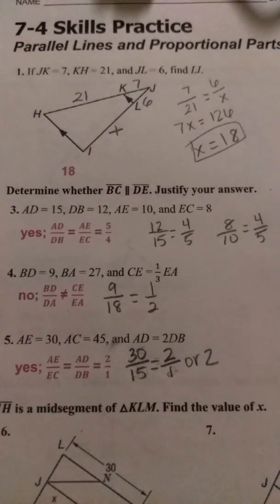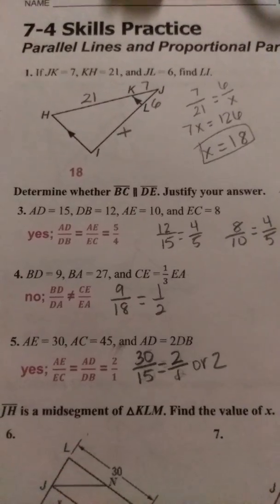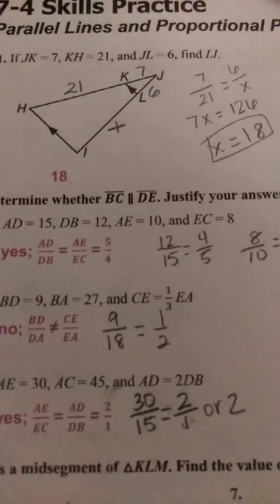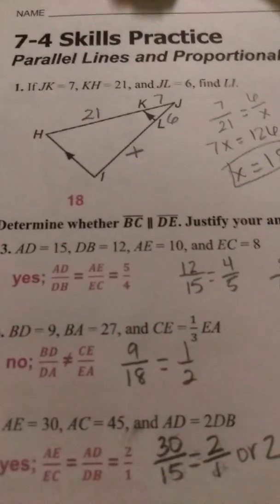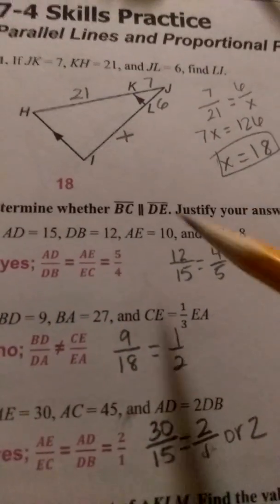On number 1 we are given some information. JK is equal to 7, KH is equal to 21, and JL is equal to 6. And then we are told to find what LI is.